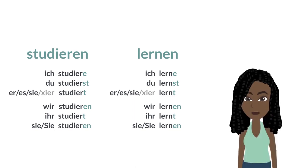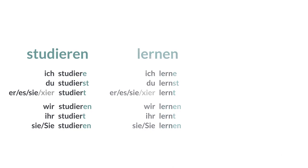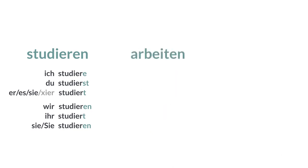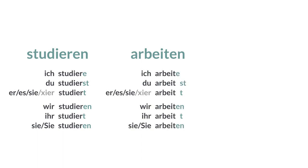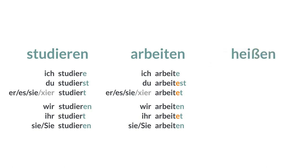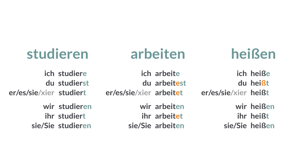Let's look at two small exceptions. Number one: when a verb stem ends in a t or d, like the verb arbeiten (to work), then we add an extra e before -st or -t. Number two: when the verb stem ends in a hissing sound, like s, sz, x, or tz — like the verb heißen — then we don't add another s in the du form.